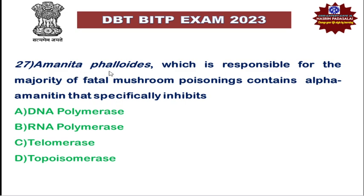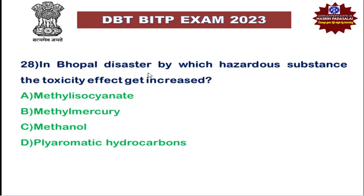Next: Amanita phalloides, responsible for the majority of fatal mushroom poisonings, contains alpha-amanitin, which specifically inhibits RNA polymerase. In a past video we discussed more about this inhibition by alpha-amanitin produced by this mushroom. Please check that video for details.